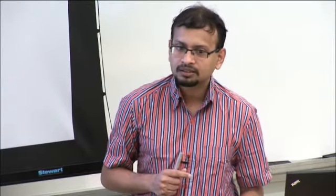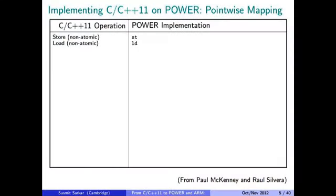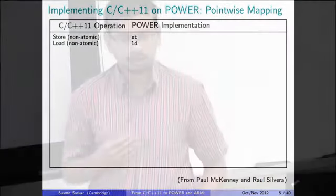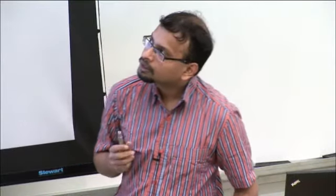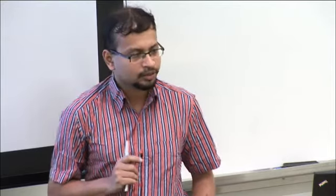Even in this restricted problem space, there are quite a number of challenges. What do I mean by this mapping? In C and C++, there are normal kinds of stores and loads which are mapped simply to assembly language stores and loads. Next, C and C++ have different kinds of atomic stores and loads — called sequentially consistent, relaxed, release, and so on — and these are mapped to underlying stores and loads with various kinds of barriers.